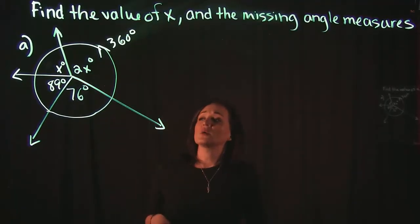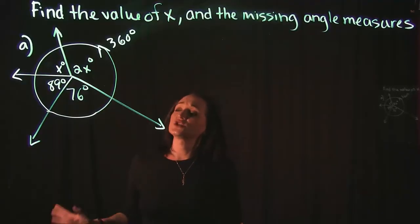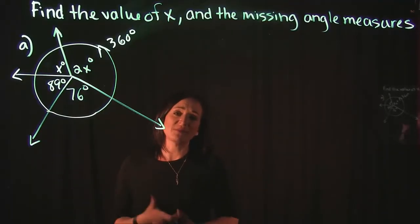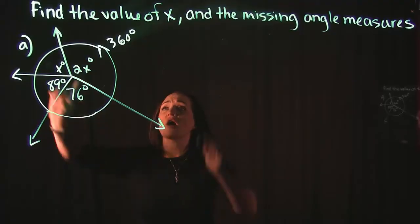So what we know is that all of these angles together should add up to 360 degrees. So we're going to take all four angles, add them up, set them equal to 360, and solve.